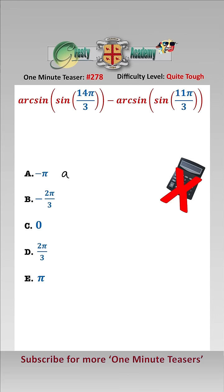We can only use the fact that arc sine of sine of theta equals theta when theta is between minus pi over 2 and pi over 2.